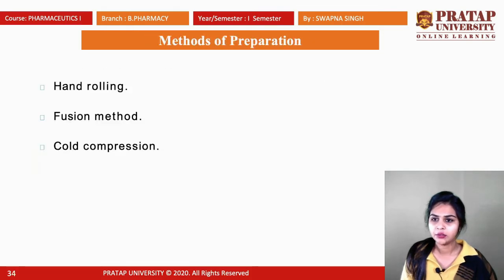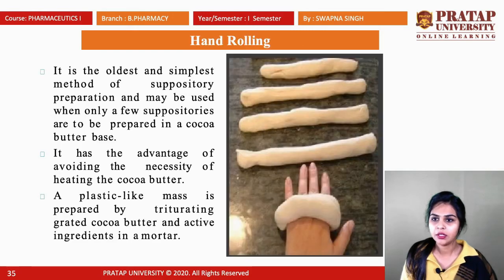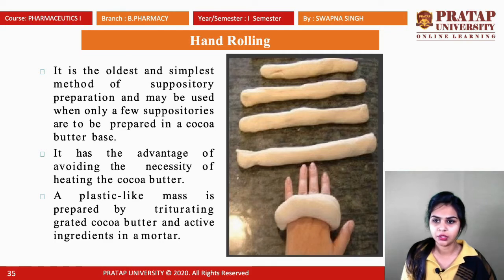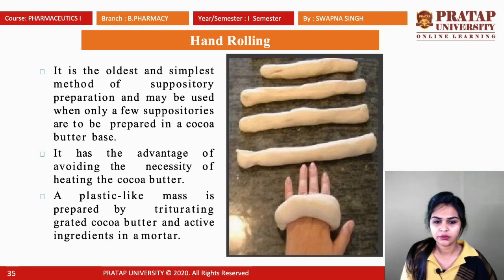Methods of preparation of suppositories: there are three methods — hand rolling method, fusion method, and cold compression method. The hand rolling method is the oldest and simplest method, mostly used when cocoa butter is used as a base. It has the advantage of avoiding the necessity of heating the cocoa butter, because heating causes cocoa butter to liquefy and it cannot withstand temperature changes.